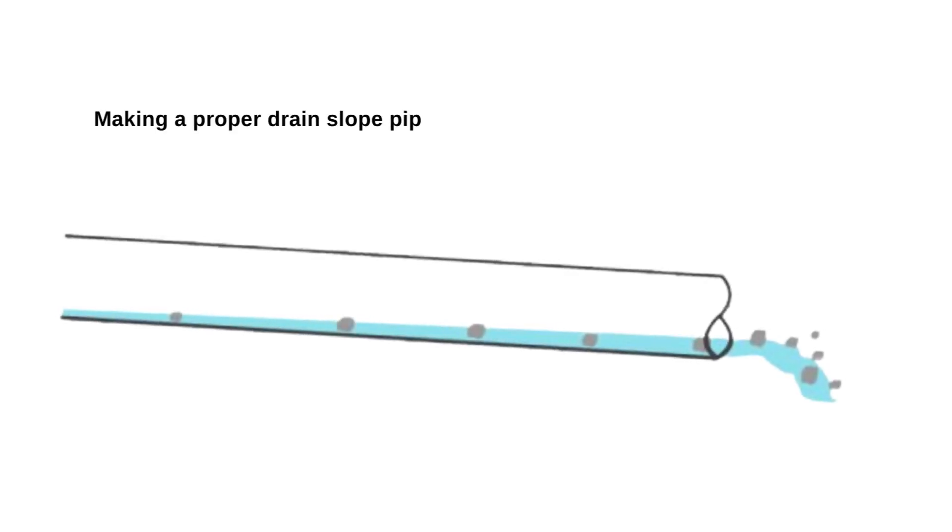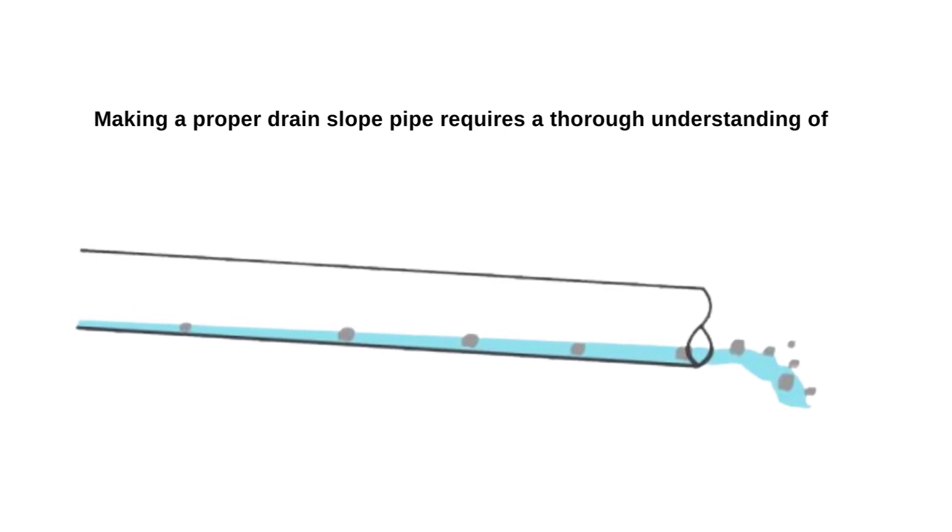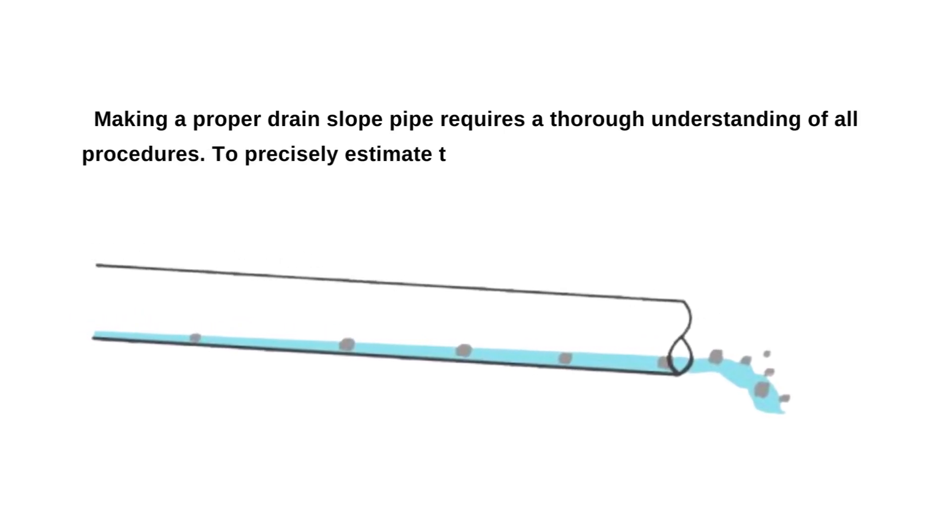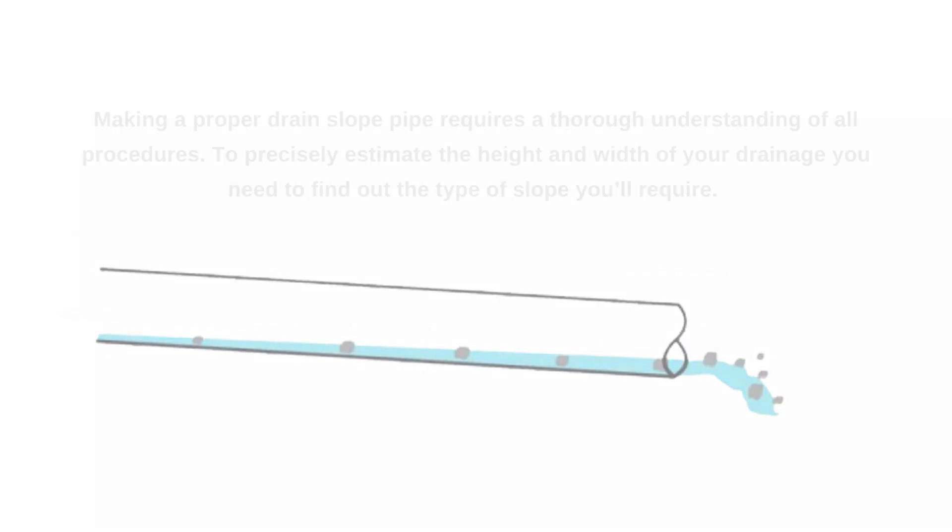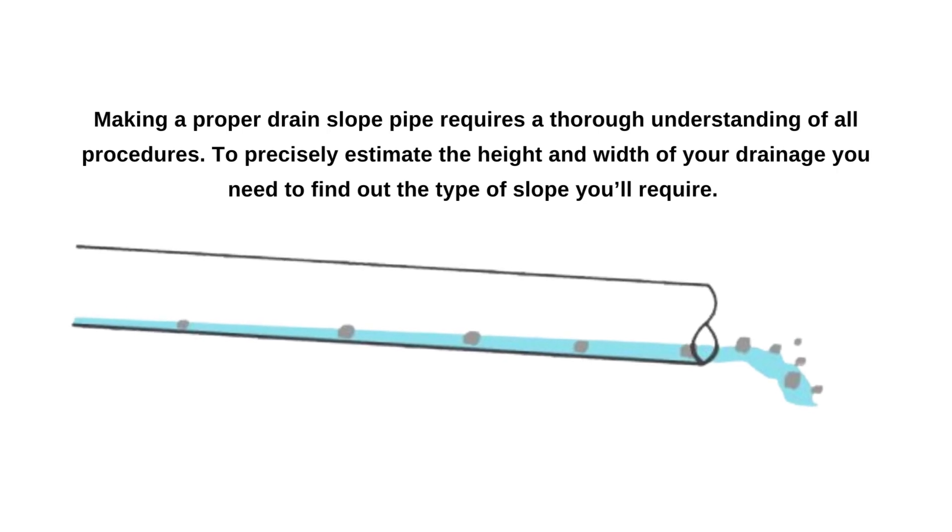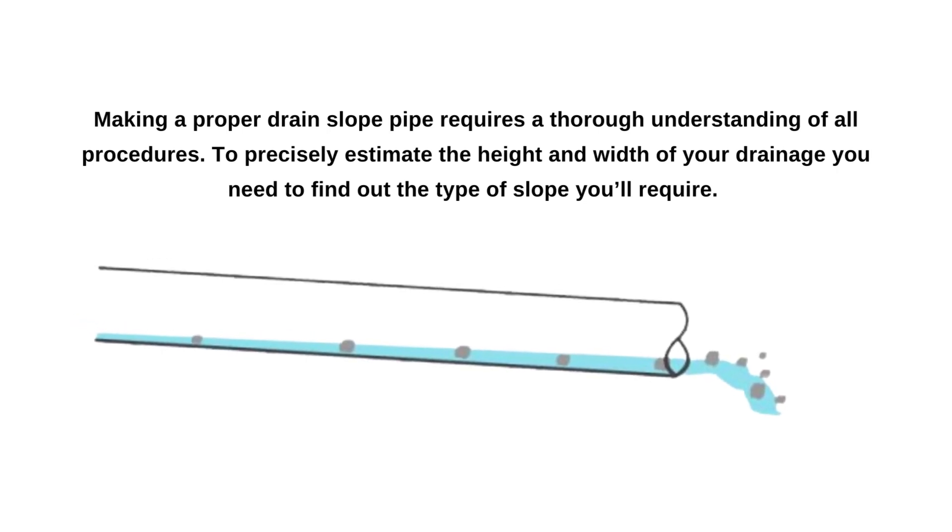Well, making a proper drain slope pipe requires a thorough understanding of all procedures. To precisely estimate the height and width of your drainage, you need to find out the type of slope you'll require. For your better understanding, we will discuss the procedure in steps.